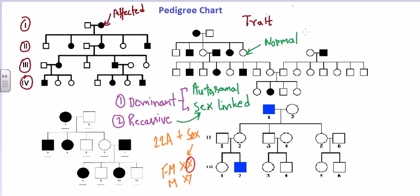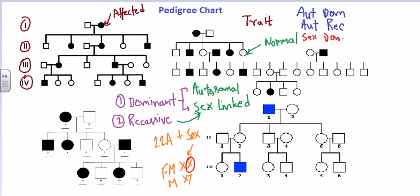So ultimately there are four different types of inheritance patterns: autosomal dominant, autosomal recessive, sex-linked dominant, and sex-linked recessive. These are the four types we need to identify when analyzing a pedigree chart.